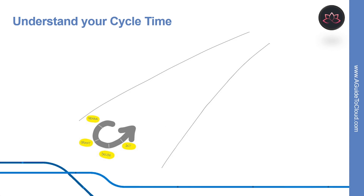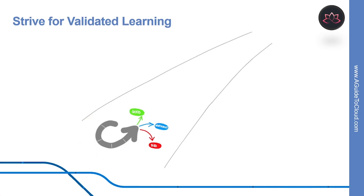Next, you decide what to pursue and you act by delivering working software to real users. All of this occurs in some cycle time. Hopefully, you use data to inform what to do in the next cycle. Many experiences tell us that roughly one-third of deployments will have negative business results, and roughly one-third will have positive results.